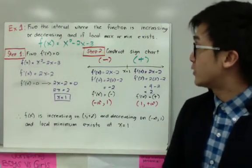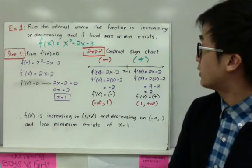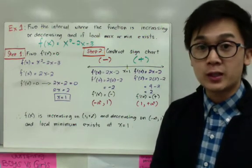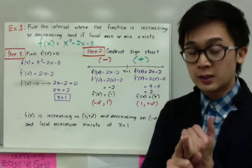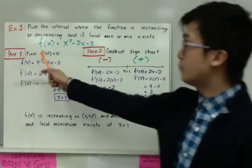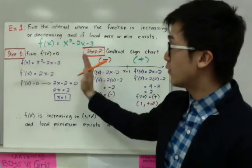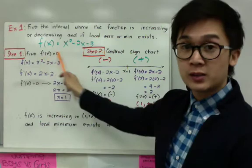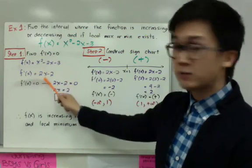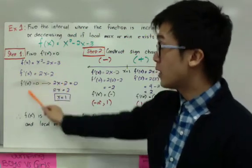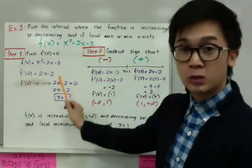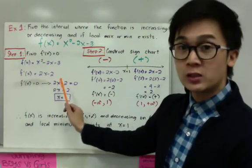Here's our first example. Let's find the interval where the function is increasing or decreasing, and if a local maximum or minimum exists. The function is x squared minus 2x minus 3. We need to find when the function is increasing and decreasing, and where the local maximum and minimum are. The first step is to find the critical number by setting the first derivative to zero. The first derivative is 2x minus 2, and setting it to zero gives x equal to 1.